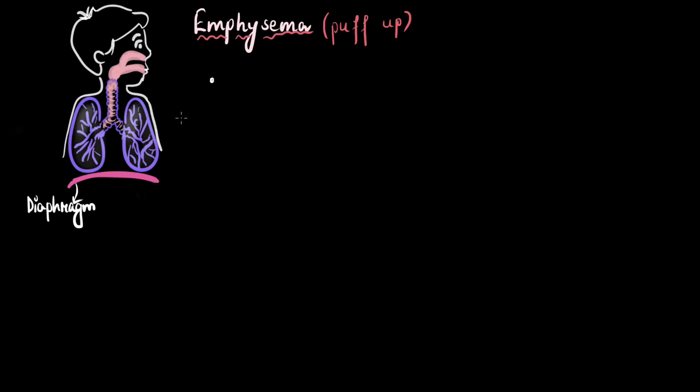Because of this swelling, the chest protrudes out. So it is said that in emphysema, the patient gets a protruded barrel-shaped chest. And again, this happens because their lungs swell up.